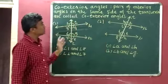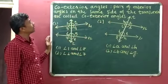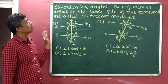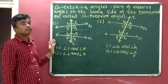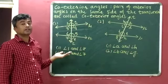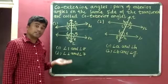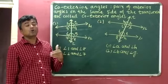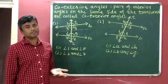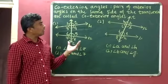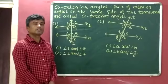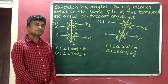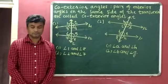So this is the explanation of co-exterior angles. Co-exterior angles are exterior angles that lie on the same side of the transversal. I hope you understand this. Thank you.